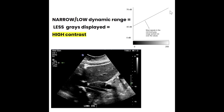Your compression map is going to change depending on your machine and settings. A common configuration assigns more signals to black. It really depends on the compression map your machine is using, but most commonly those low-level echoes are assigned to black, and the rest of the grays display the other decibel signals that are coming back.